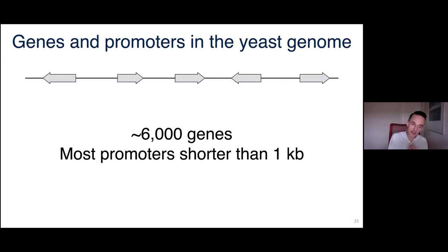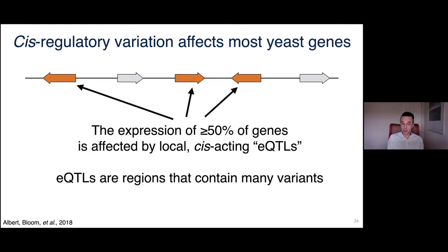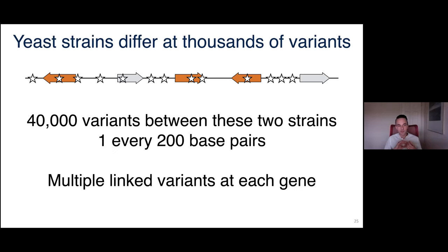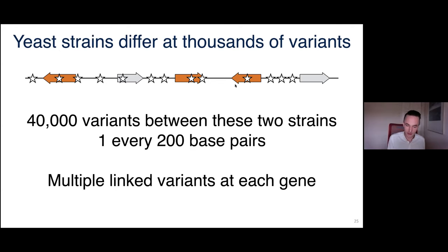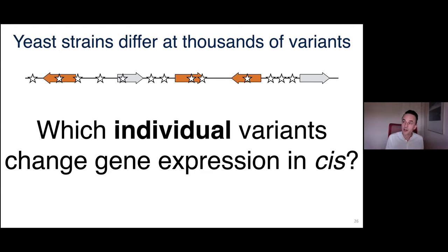About half of these genes are influenced by a local cis-acting eQTL. The two strains have one variant every ~200 base pairs, so most genes have multiple variants in their vicinity — not just one. This creates the question: which of these variants are actually causing all these local expression changes?